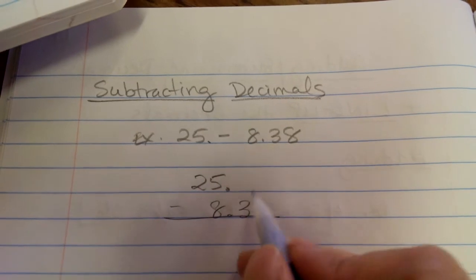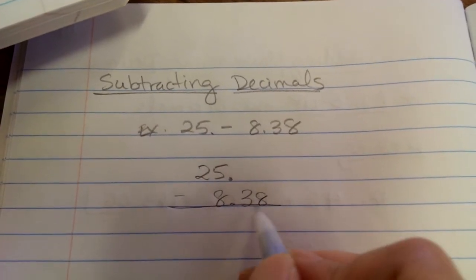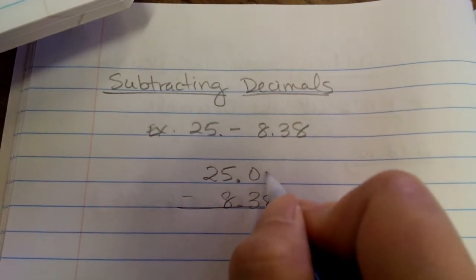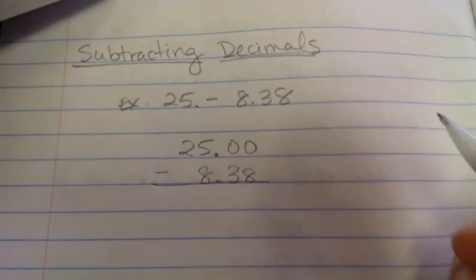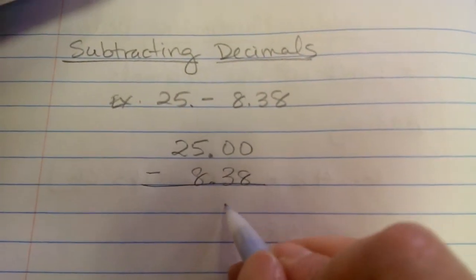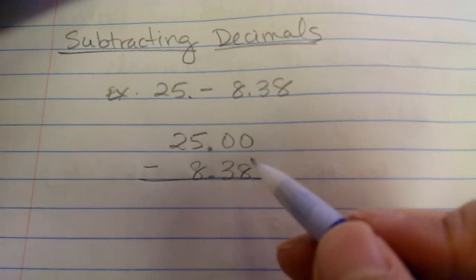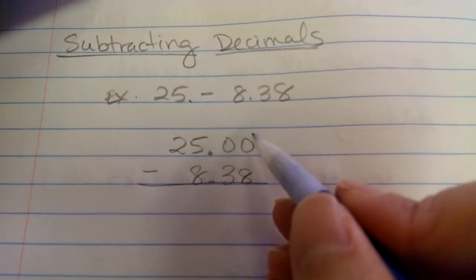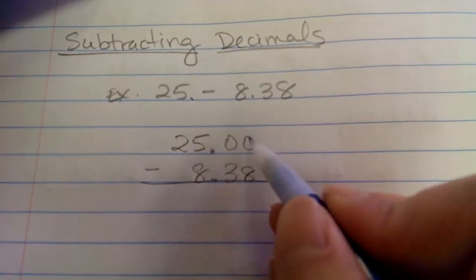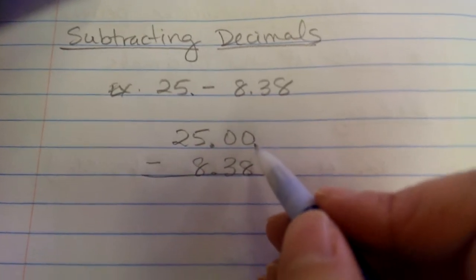Now, again, if there are no digits above your numbers, what do we put? Zeroes. Now, I have a lot of kids think, oh, I'll just bring down the 38. You cannot do that. Can you take 8 from zero? No, you can't. You don't get 8 more when you take 8 from nothing. Right? So you need to borrow.